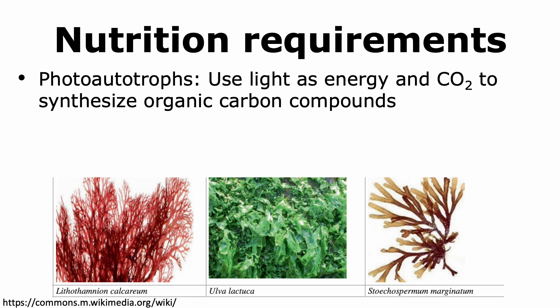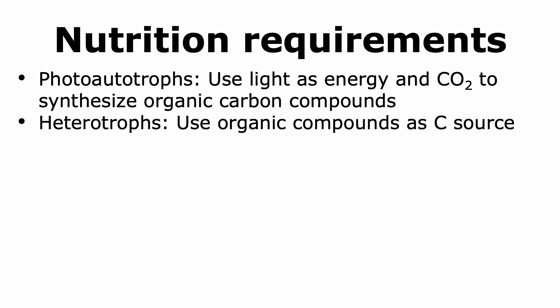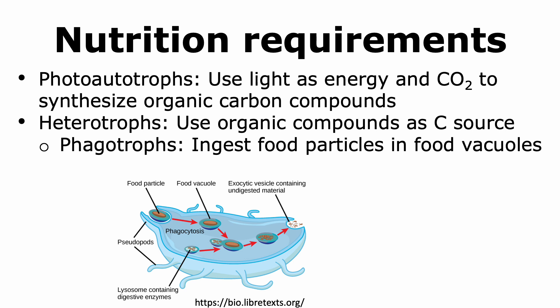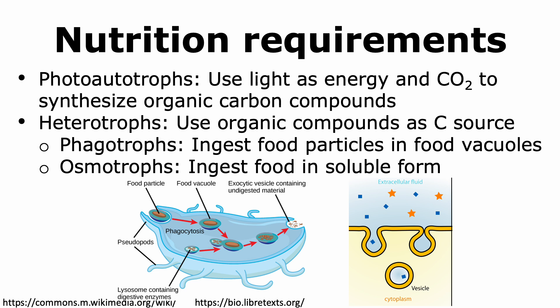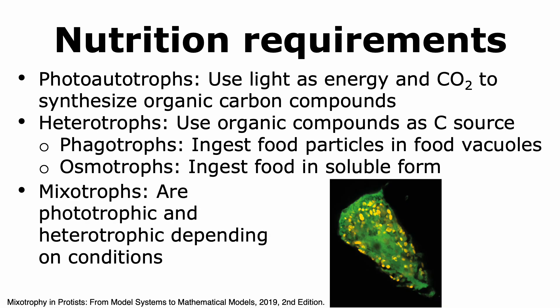Protists can use different sources of energy and carbon as part of their life cycle. Photoautotrophs are those that use light as a source of energy and use inorganic carbon dioxide to synthesize various organic carbon compounds. Heterotrophic protists use organic carbon compounds as energy sources as well as carbon sources. Phagotrophs are protists that are able to ingest food particles, which then reside in food vacuoles where they get broken down. Osmotrophs are protists that ingest food in a soluble form, usually through pinocytosis or macropinocytosis. Mixotrophs are protists that can change their nutritional requirements, becoming phototrophic in certain conditions and heterotrophic in others.